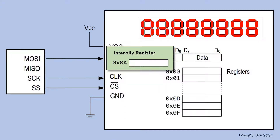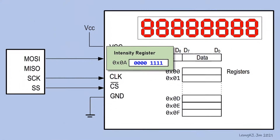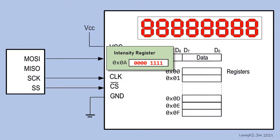Register 0A is called the intensity register. It can contain 0000 to a maximum of 1111. When the content is at its lowest, the intensity of the display is also at the lowest. The intensity is at its maximum when the content is 1111.